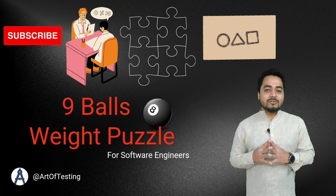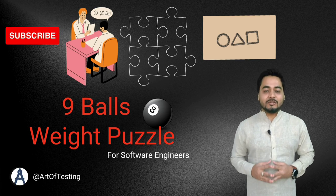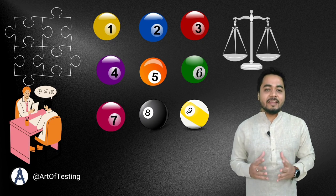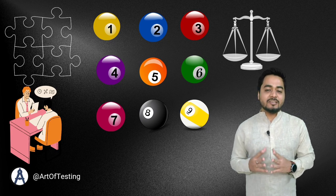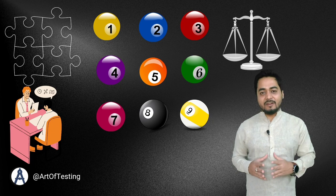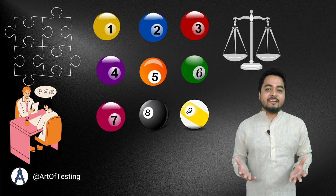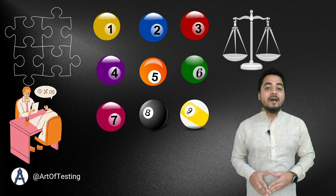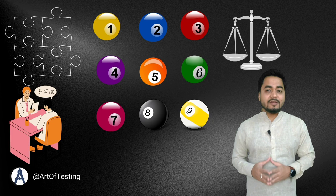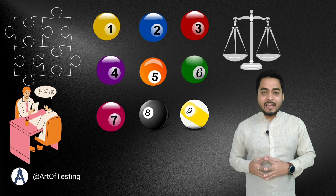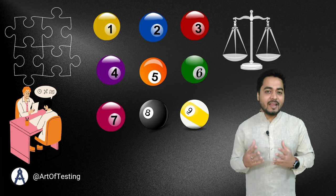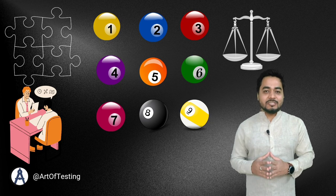In this video we will talk about the puzzle where a user is given 9 balls, out of which one ball is heavier, and you are given a two-sided balance using which you have to identify that ball. Remember, this question can also be twisted — in place of heavier, the interviewer may say the ball can be lighter — but the solution and the approach remains the same.